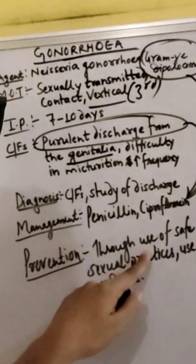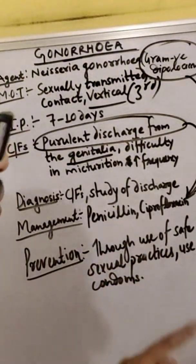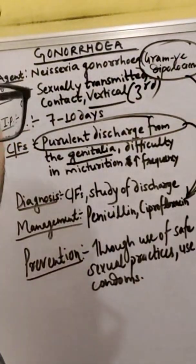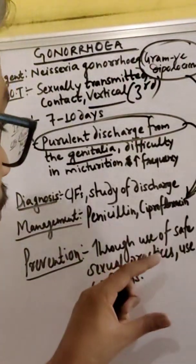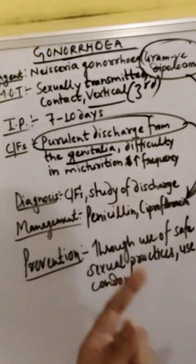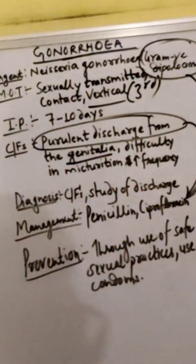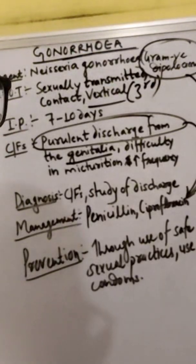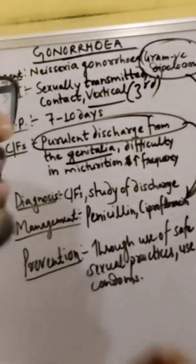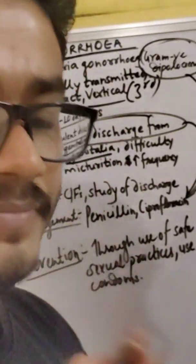For prevention, safe sexual practices should be followed and condoms should be used. Contraceptive devices used during intercourse help prevent STI diseases like gonorrhea. This is all about gonorrhea. If this video is useful for you, please like and subscribe. Thank you.